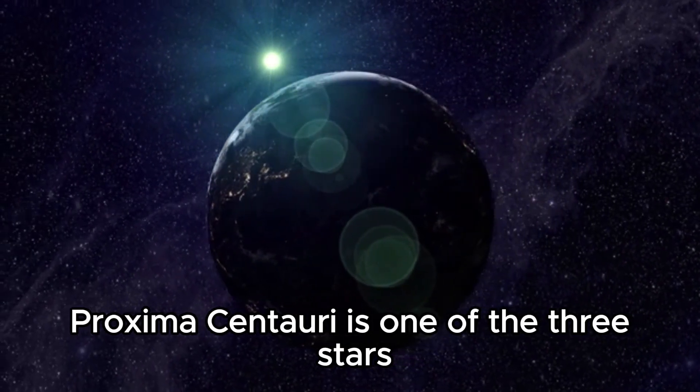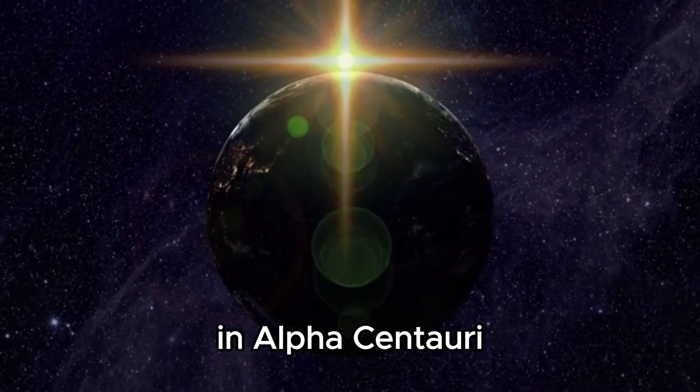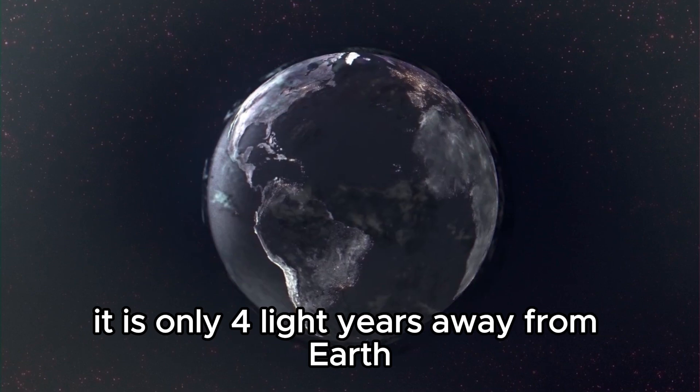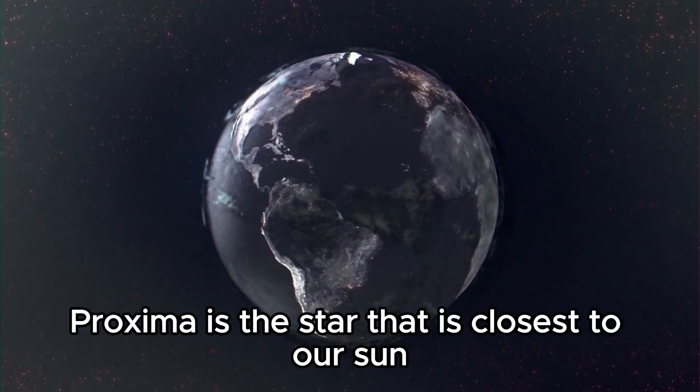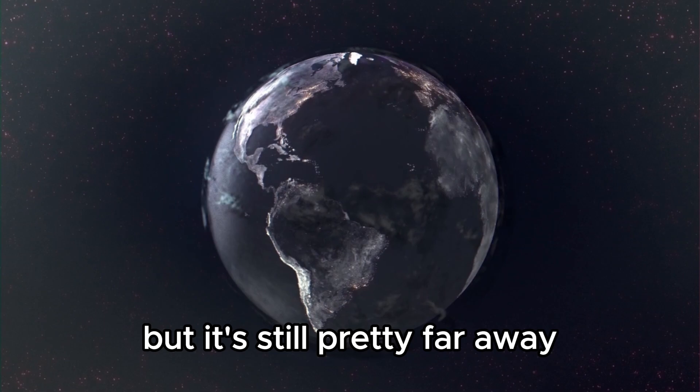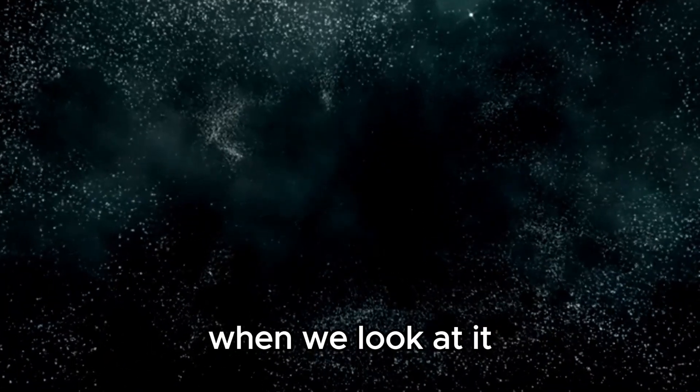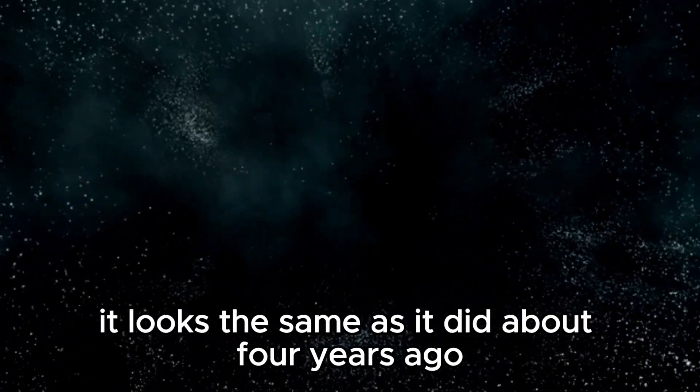Proxima Centauri is one of the three stars in Alpha Centauri. It is only four light years away from Earth. Proxima is the star that is closest to our sun, but it's still pretty far away. When we look at it, it looks the same as it did about four years ago.